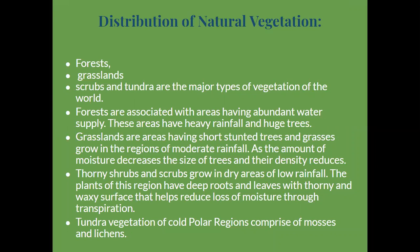Grasslands are areas having short, stunted trees where grasses grow in regions of moderate rainfall. As the amount of moisture decreases, the size of trees and their density is reduced. There are two types of grasslands: tropical grasslands and temperate grasslands.